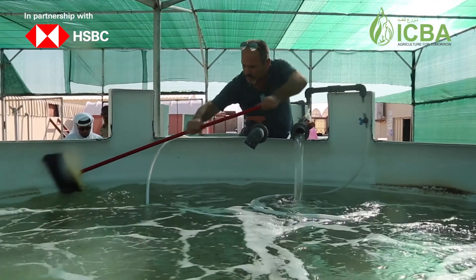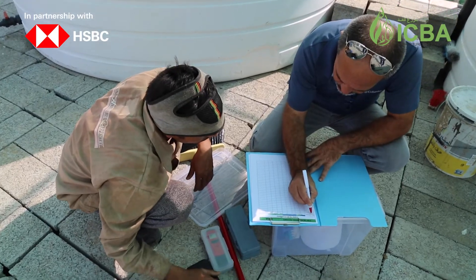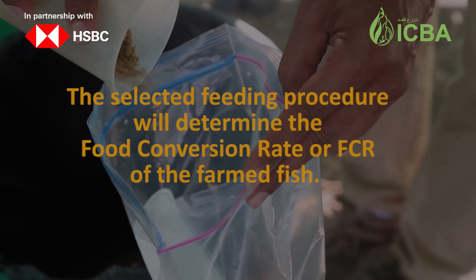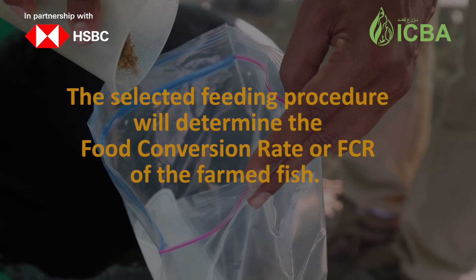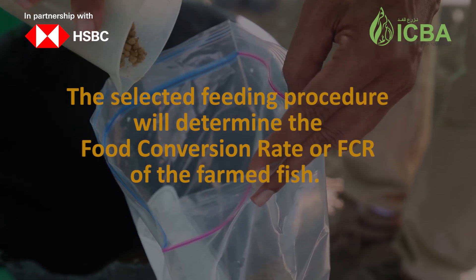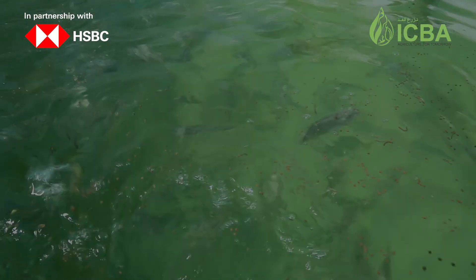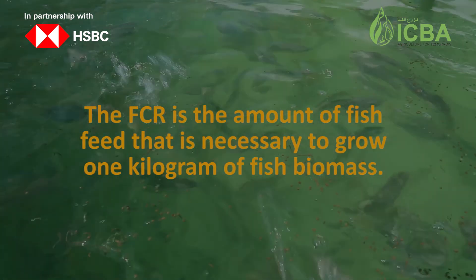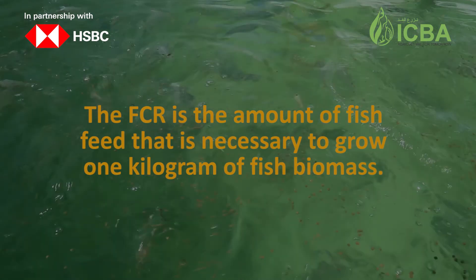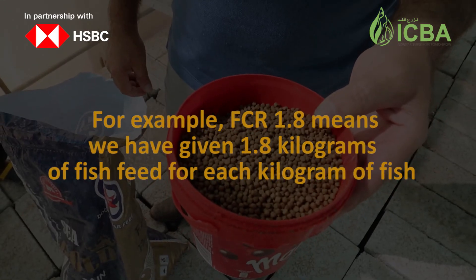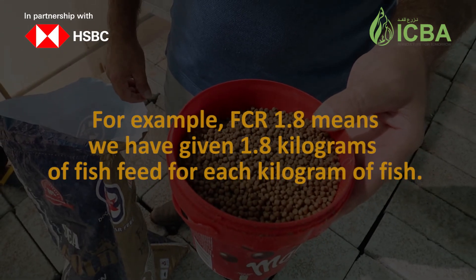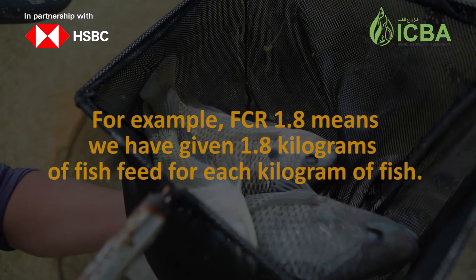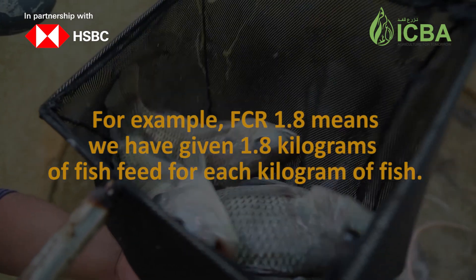Leftover food could make the tank dirty, so at the end of feeding we should clean the area and record the observation. The selected feeding procedure will determine the food conversion rate (FCR) of the farm. The FCR is the amount of fish feed necessary to grow one kilogram of fish biomass — for example, an FCR of 1.8 means that 1.8 kilograms of feed were given for each kilogram of fish grown.